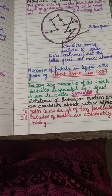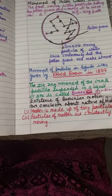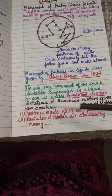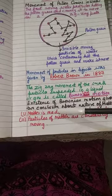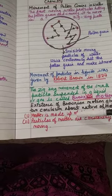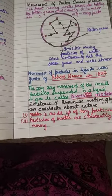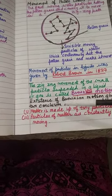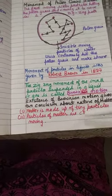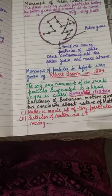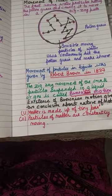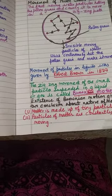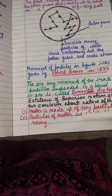The existence of Brownian motion gives two conclusions about the nature of matter: matter is made up of tiny particles, and particles of matter are constantly moving.